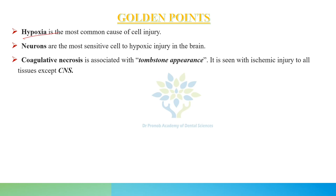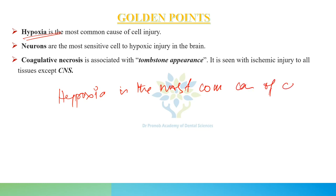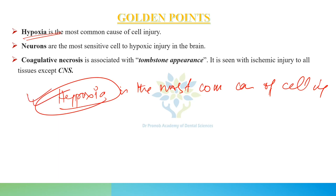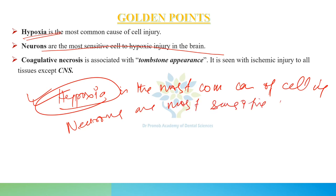Having studied the chapter on cell injury, we know that hypoxia is the most common cause of cell injury. Then, neurons are the most sensitive cells to hypoxic injury. So remember: hypoxia is the most common cause, and neurons are the most sensitive cells to hypoxic injury.